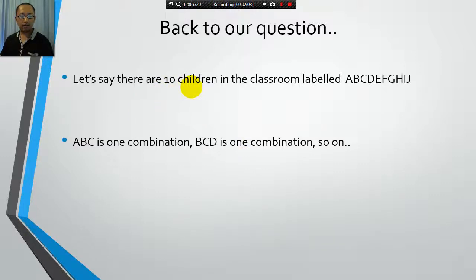So say that there are ten children in the classroom and each child we give them a letter. So child number one is A, child number two is B, three is C and so on. So we have ten children. Now when you pick three children out of the ten children, let's say you pick children A, B and C. Now that is one single combination. It doesn't matter if you pick them in a different order. So let's say you pick them as B and then you pick C and then you pick A, or you pick C and then B and then A. These are all the same combination, same one combination.